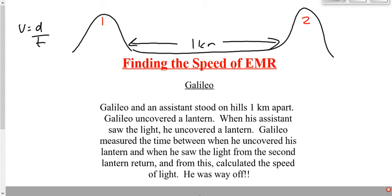The reaction time of literally timing this, but also the reaction time of uncovering the lanterns. If it takes a half a second to uncover the lantern, remember what I said the other day about the speed of light — light can make about 30 return trips across Canada in one second. If it takes him half a second to uncover a lantern, light could have traveled 15 return trips across Canada in that time. The reaction time here is so gigantic compared to the time it actually takes the light to travel that any value he gets for time, and therefore velocity, is going to be completely meaningless.